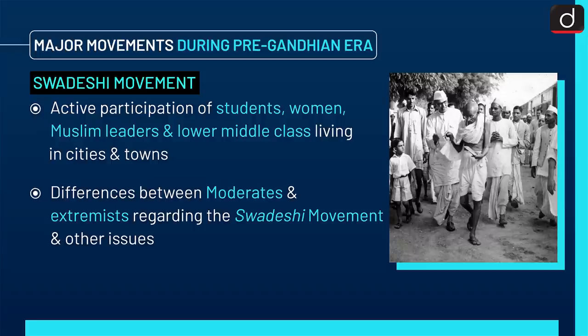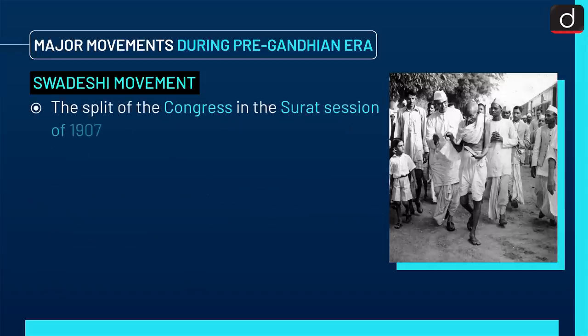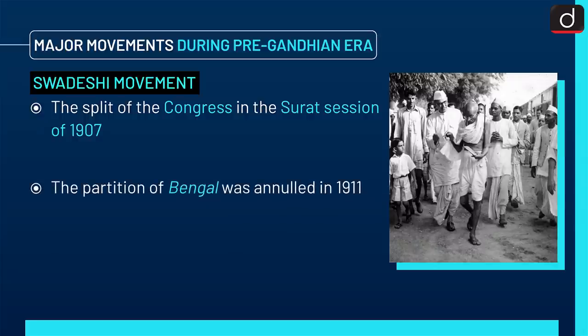There were differences between moderates and extremists regarding the Swadeshi Movement and other issues, leading to the split of the Congress in the Surat Session of 1907. The partition of Bengal was ultimately annulled in 1911.